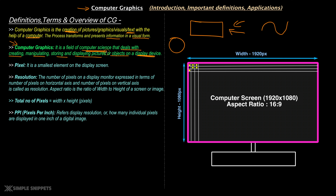Let's move to the important definitions — the very basic fundamentals of computer graphics. One such term you'll come across is called a pixel. Pixel is the smallest element on the display screen. This is the most fundamental, most basic element of a display screen, which is called a pixel.